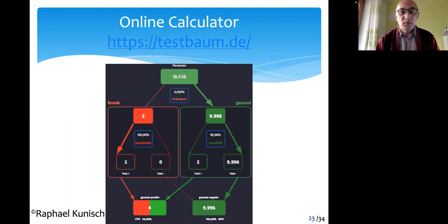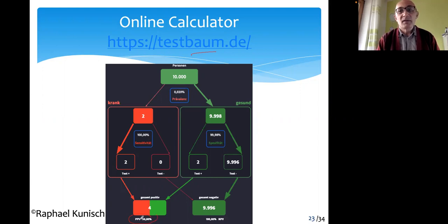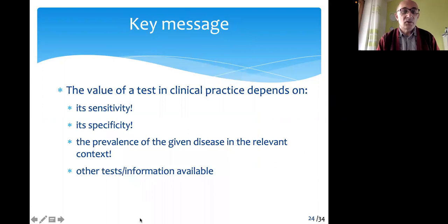In the TestBomb website — where 'bomb' means tree in German, so it's a test tree website — you can easily see that the positive predictive value of your test in this scenario is only 50%, which is not enough to reach a conclusion.